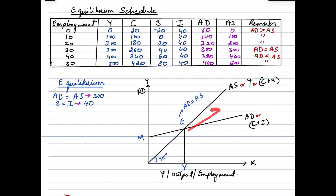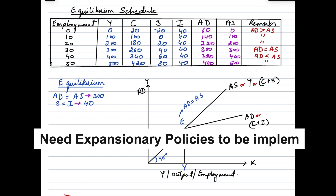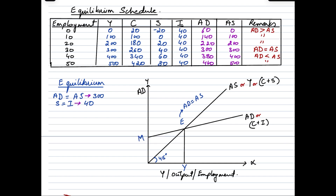To the right of point E, aggregate supply is greater than aggregate demand, meaning people are not buying enough of what is available — demand is falling short, indicating a recessionary gap. This leads to excess inventory as businesses face piled-up goods and services, forcing them to cut production, resulting in unemployment, layoffs, and reduced work hours. To address this, the government may implement expansionary fiscal policies and the central bank expansionary monetary policies to expand aggregate demand toward aggregate supply and promote economic recovery.